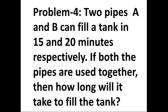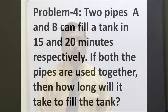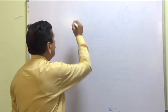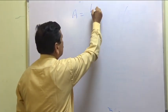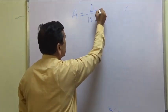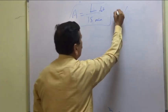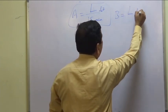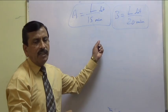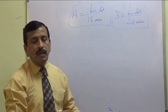Two pipes A and B can fill a tank in 15 and 20 minutes respectively. If both pipes are used together, how long will it take them to fill the tank? Suppose capacity of the tank is L liters. Then pipe A fills L liters in 15 minutes, and pipe B fills L liters in 20 minutes. Both pipes together fill L liters in T minutes, and our aim is to find T.